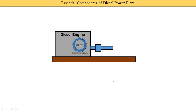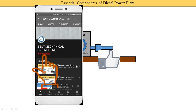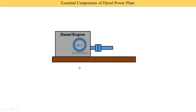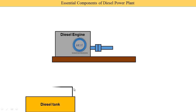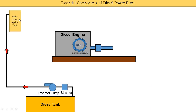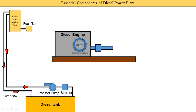The second system is the fuel supply system. The diesel is first supplied from the main diesel tank to the strainer, then to the transfer pump. The transfer pump supplies diesel into a daily consumption tank. If the daily consumption tank overflows, the diesel is supplied back to the main diesel tank. From the daily consumption tank, a fuel filter removes impurities and dust particles from the diesel, and then the diesel is supplied to the fuel injector.